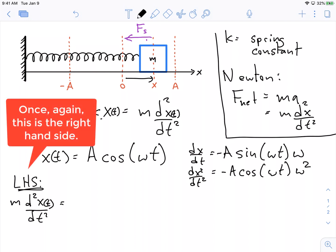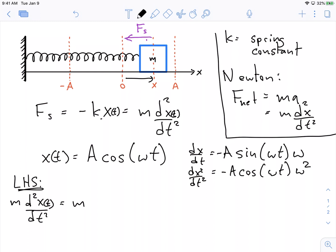So on our left hand side, we have m times two derivatives, so it's negative A times omega squared times cosine of omega t. This is equal to negative m times omega squared times A cosine omega t. What's A cosine omega t equal to? Well, that's equal to x of t. So this is just equal to negative m omega squared x of t. That's the left hand side.